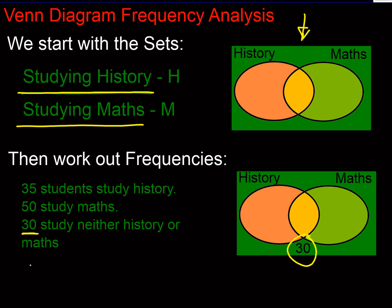But we also know that if there are a total of 100 and 30 are in neither set, then 70 are doing either history or maths. We'd write that in set theory with the union symbol.